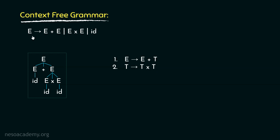Basically, instead of the rule e can be rewritten as e into e, we are rephrasing it as t can be rewritten as t into t. And now, due to this organization, from the start symbol e, we can first derive e plus t and then only from this t, we can derive t into t. So, precedence-wise, the multiplication operator can only be derived at a lower level than addition.